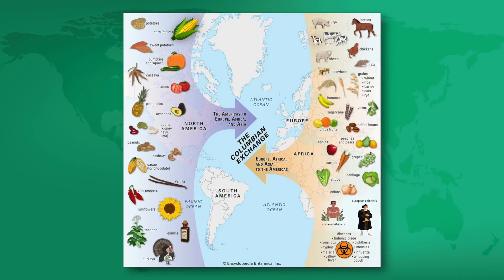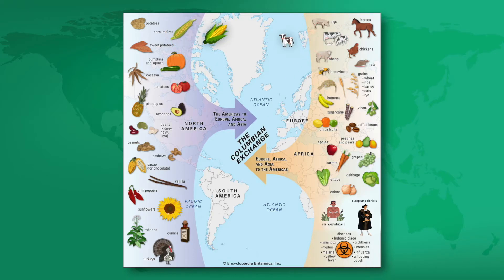This global movement of goods improved the diets of populations worldwide. Before, people were limited to the food that grew in their region. But now, products from the Americas, like corn, could be mixed with products from Europe and Asia, like steak. This is how these ingredients came together to make the tacos I'm eating today.